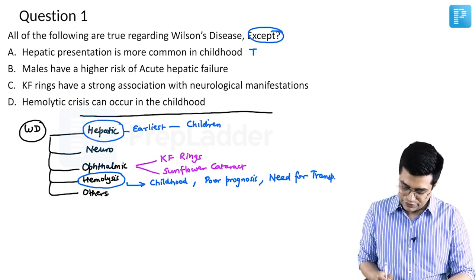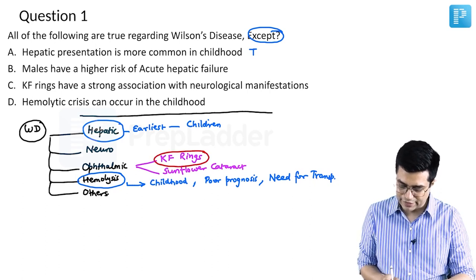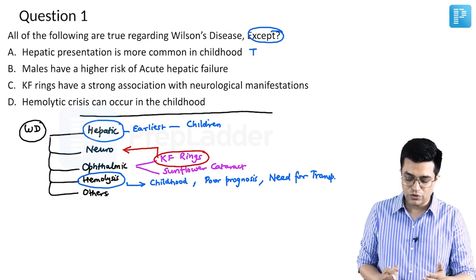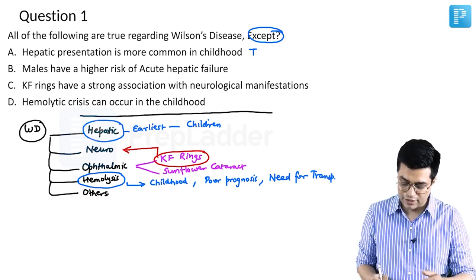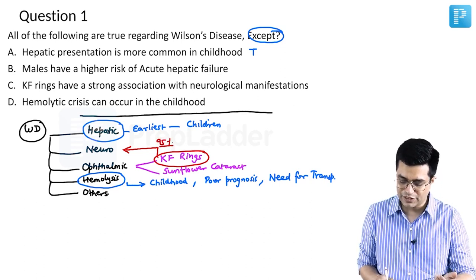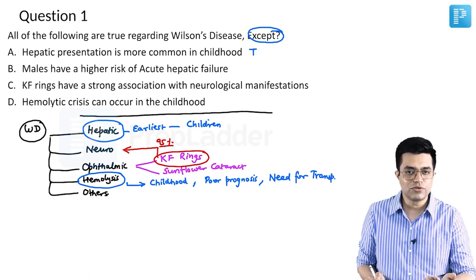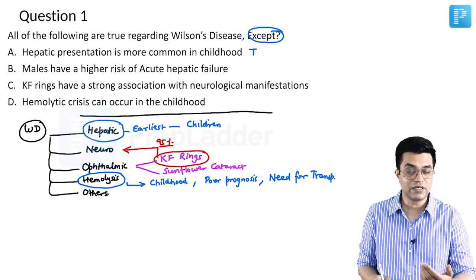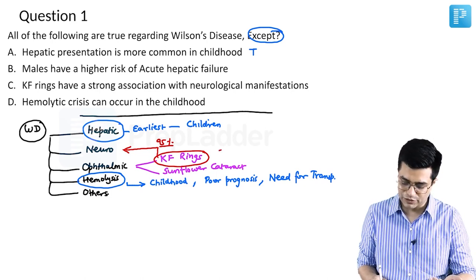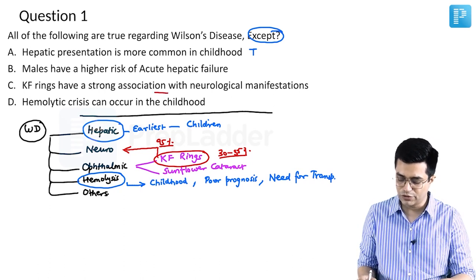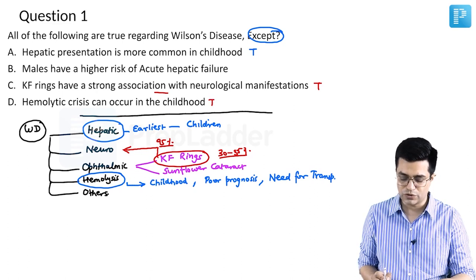Kayser-Fresher rings have a very strong association with neurological manifestations. In fact, Kayser-Fresher rings are found in patients 95% of whom have an underlying neurological manifestation as well. They can occur in those with hepatic manifestation also, but the association with hepatic manifestation is only about 30 to 35%. So option C — that Kayser-Fresher rings have a strong association with neurological manifestation — is a true statement. And option D — hemolytic crisis can occur in childhood — is also true.